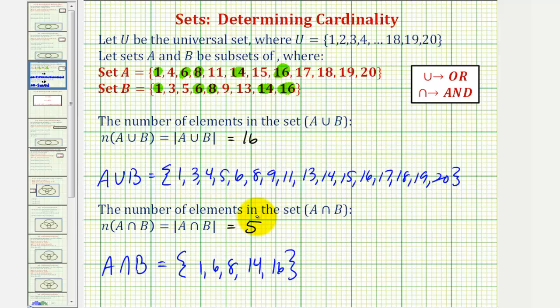So notice how if we can determine the union and intersection of two sets without using a Venn diagram, it does make finding the cardinality much faster. I hope you found this helpful.